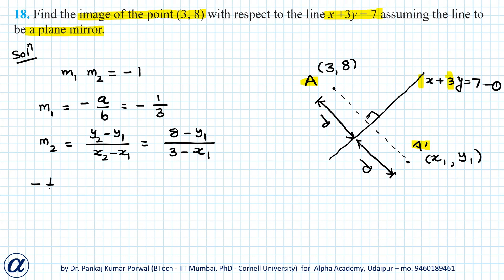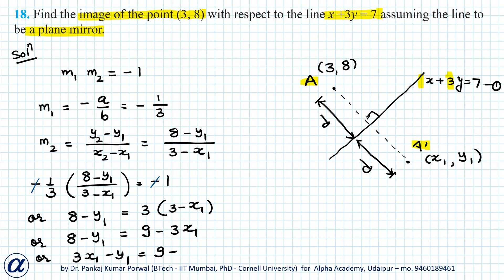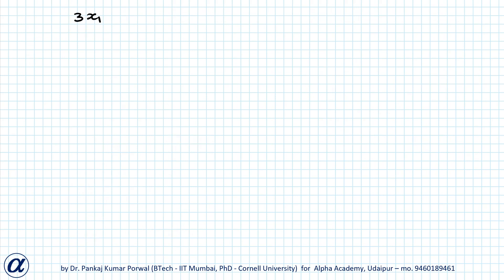Substituting, I get: minus 1 over 3 times (8 minus y₁) over (3 minus x₁) equals minus 1. The two negatives cancel, giving 8 minus y₁ equals 3 times (3 minus x₁), or 8 minus y₁ equals 9 minus 3x₁. Rearranging, 3x₁ minus y₁ equals 9 minus 8, which gives 3x₁ minus y₁ equals 1. Let's call this equation 2.